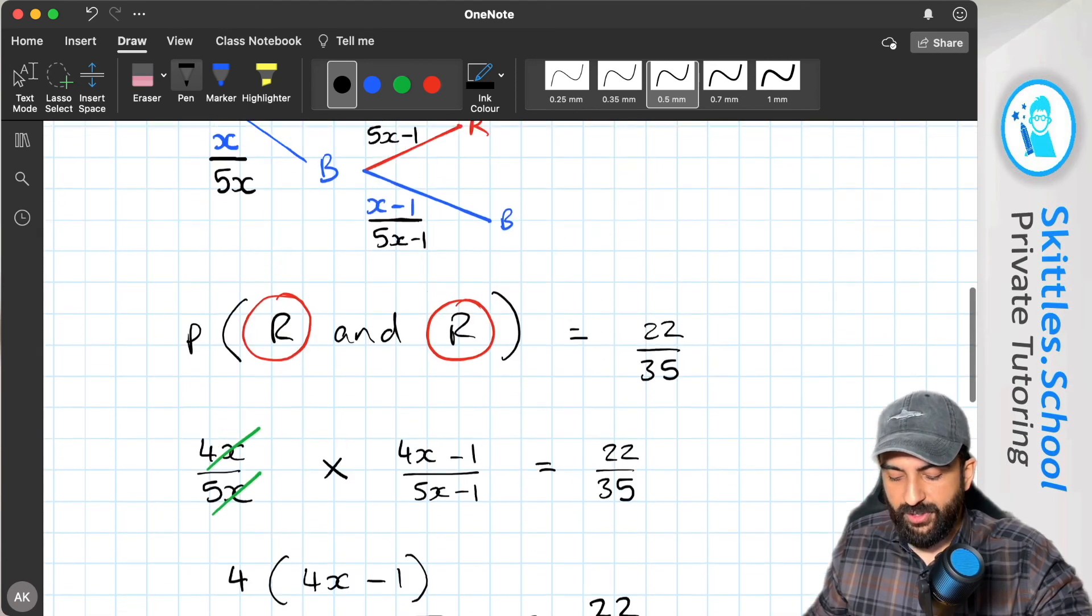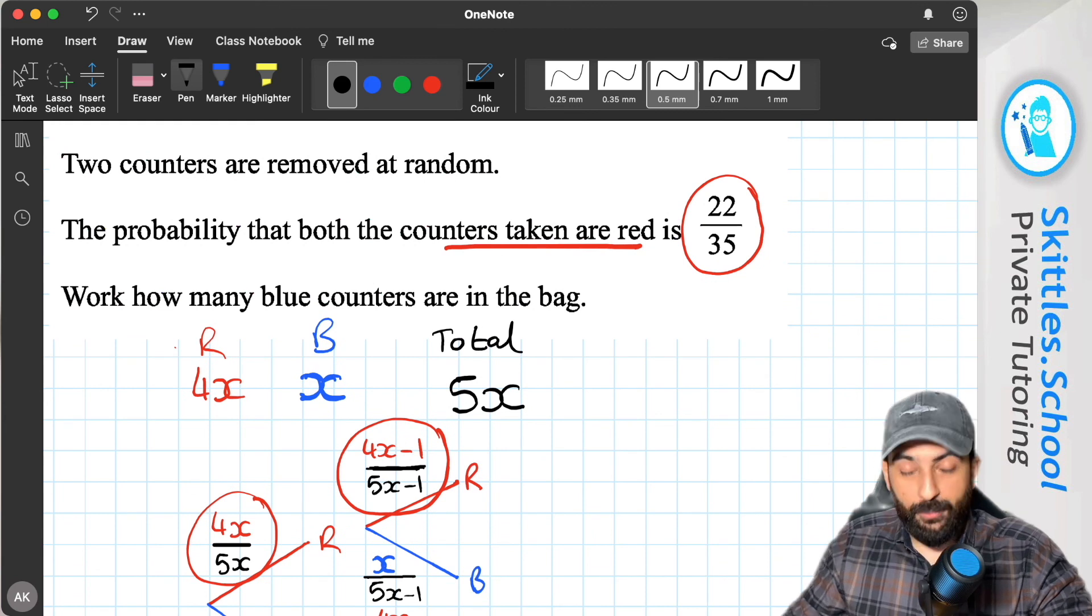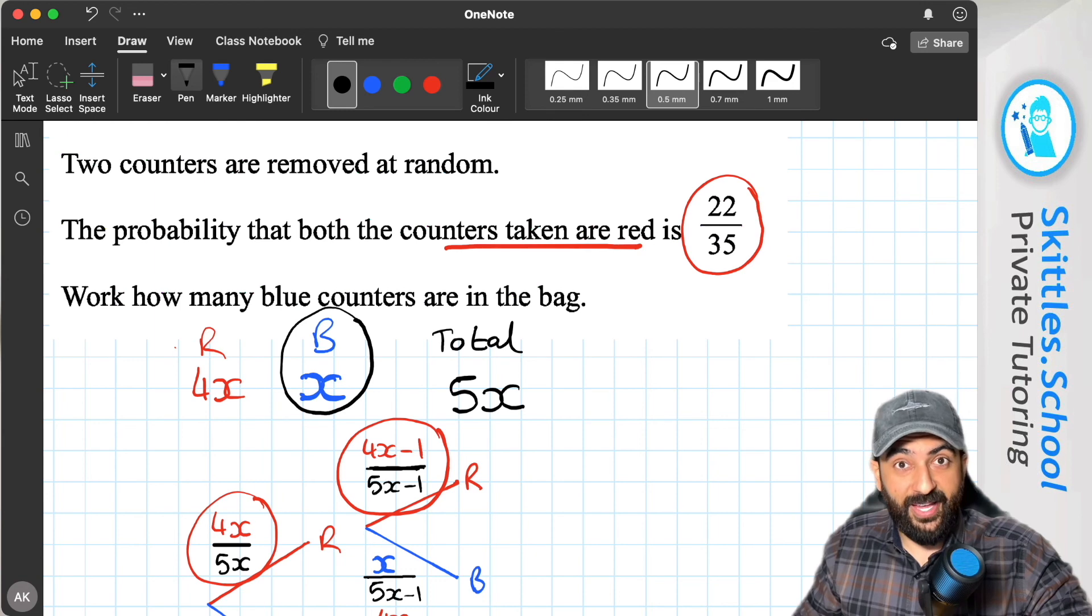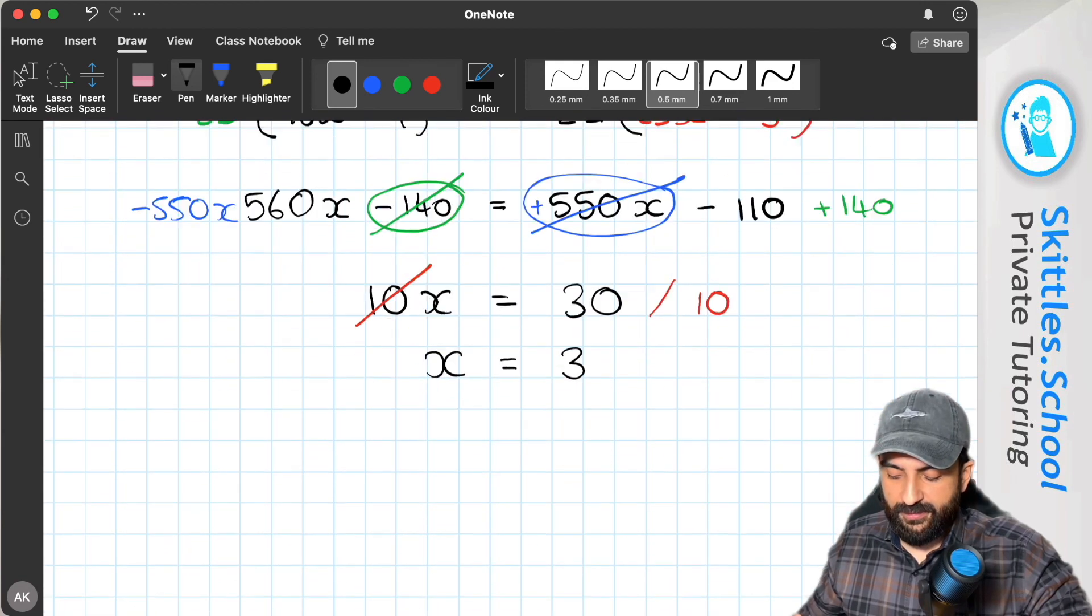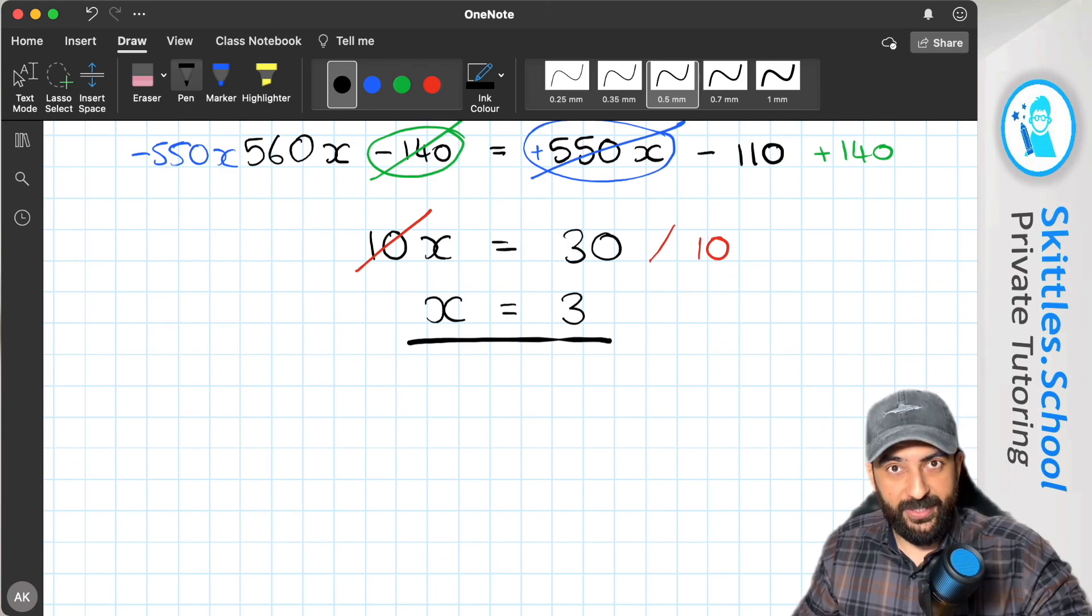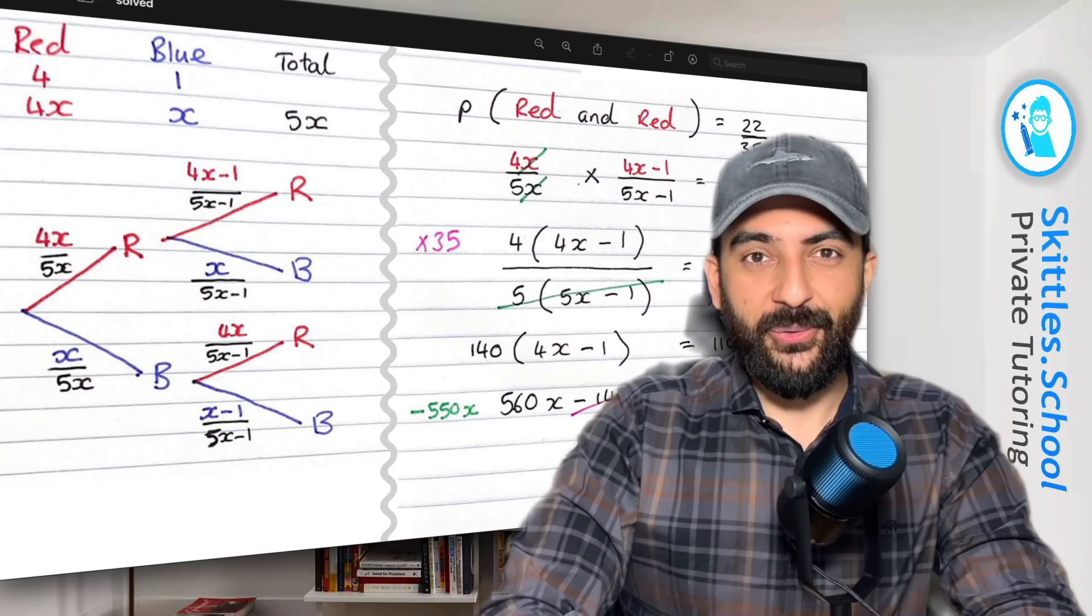That leaves us with x equals 3. And if you remember, the question asked us how many blue counters in the bag. Well, blue counters is x. And we've worked out x. So the number of blue counters in the bag is 3. And that's all there is to it.